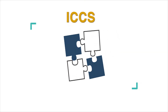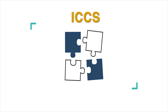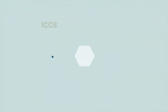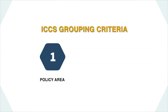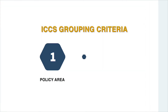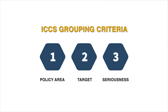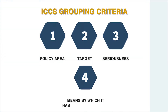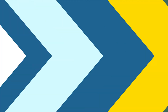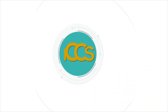The ICCS groups offenses based on four main criteria. One, policy area of a criminal act or event. Two, target of a criminal act or event. Three, seriousness of a criminal act or event. Four, means by which a criminal act or event has been perpetrated.